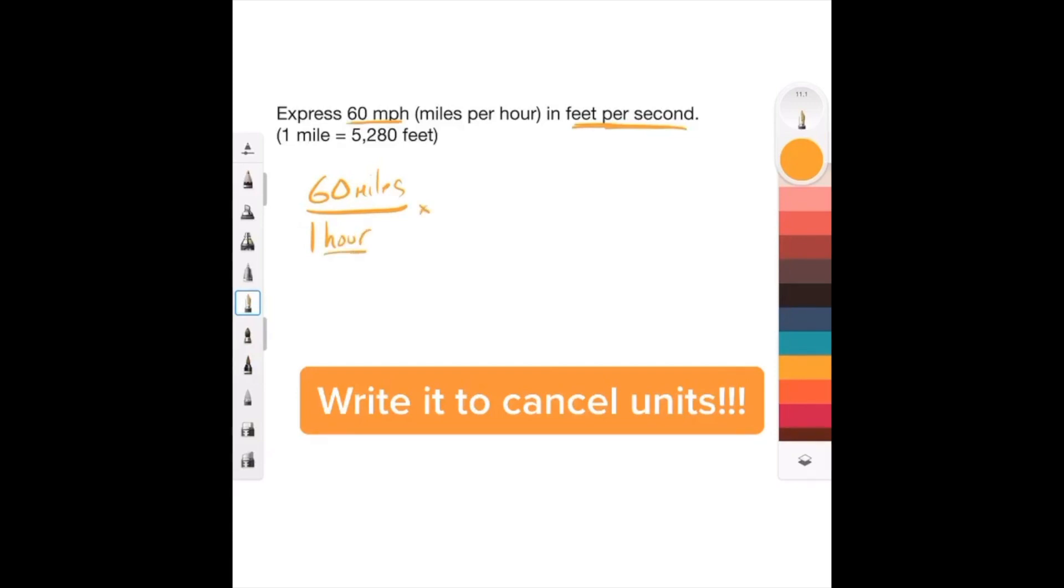We want to cancel hours, so what would we do? We would put hours up here. One hour is equal to 60 minutes because we know that, so we can cancel hours.